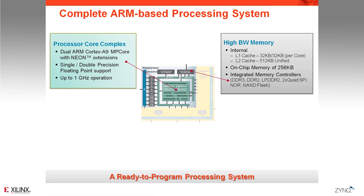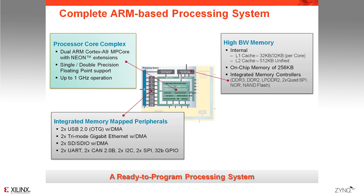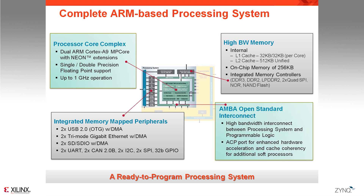In addition, there is a 256 KB on-chip memory, which can be used as a scratchpad, as a shared memory between the programmable logic and the processing system to share data asynchronously, or even to store a small real-time operating system. There are also dedicated memory controllers to connect to external dynamic or static memories to hold boot code and the configuration of the programmable logic. This comes with a broad set of peripherals including USB, CAN, and Ethernet, all built with DMA. The processing system connects to the programmable logic using the AXI interface.